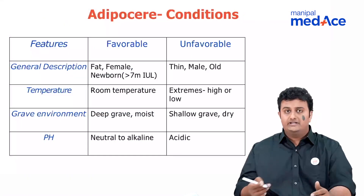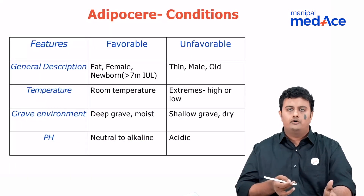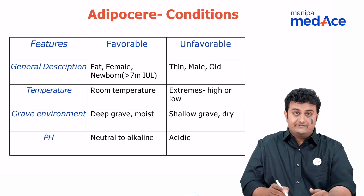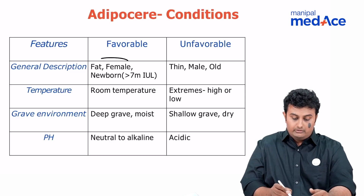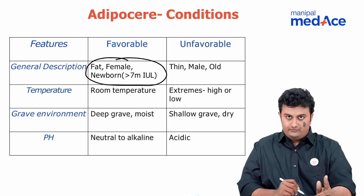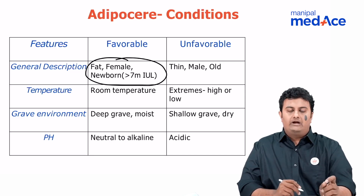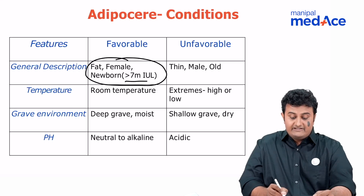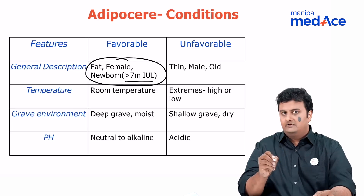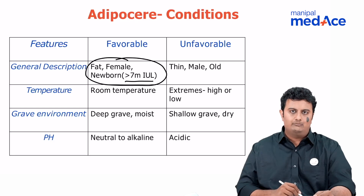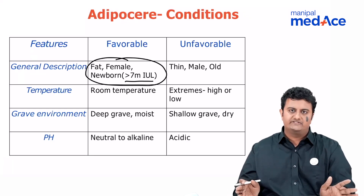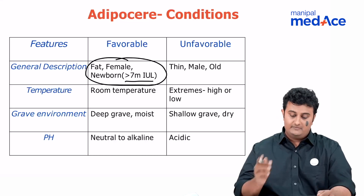Let's talk about the conditions which are favorable and unfavorable for the formation of adipose ear. Favorable: if the person is fat, female, or a newborn. A question that has been asked before is at what age does adipose ear formation not take place. If the person is above seven months of intrauterine life, then only will you see adipose ear formation. Below seven months, you will not see it because there are barely any adipose deposits in the baby's body.